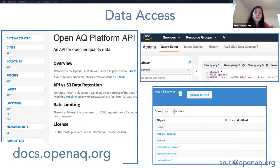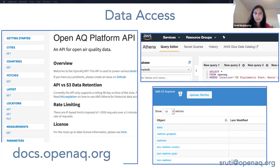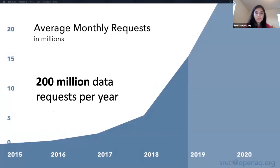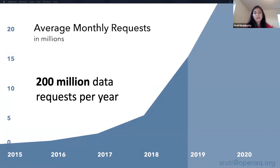We have a variety of options on how to access the data based on your skills and purpose. The community has actually built tools on top of the platform, like an R and Python wrapper for the API. In terms of the API, we've gotten 200 million data requests per year. Already in March — and March isn't even over yet — we've had 30 million requests, and that number only keeps increasing. It's been accessed in 162 countries.